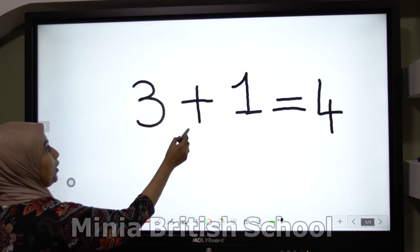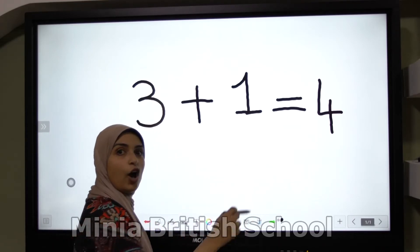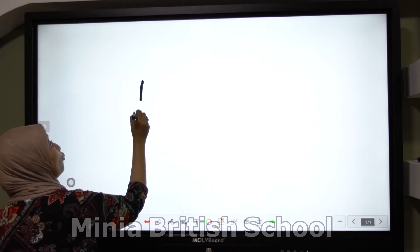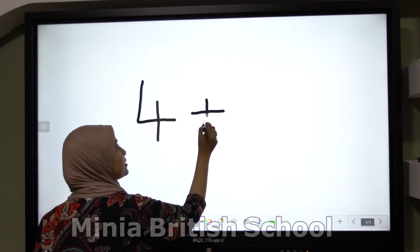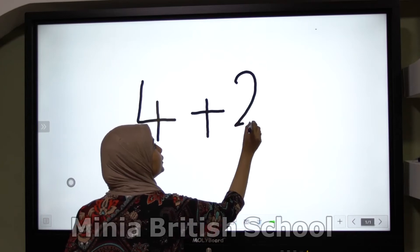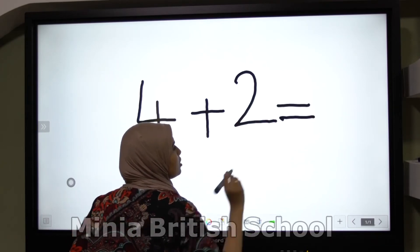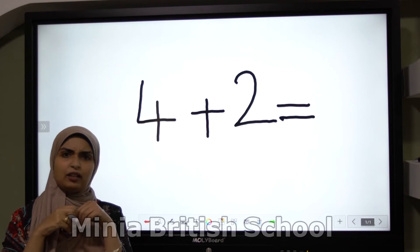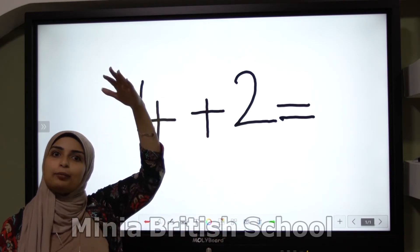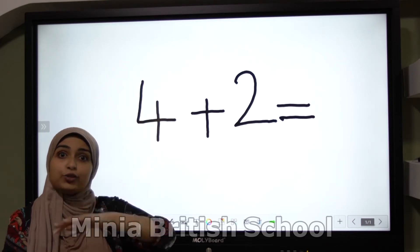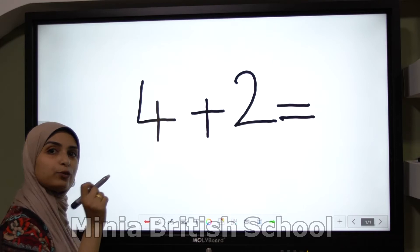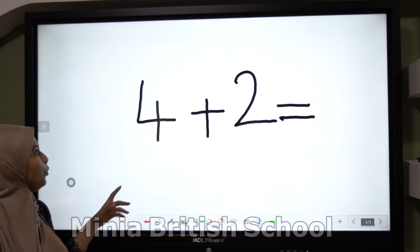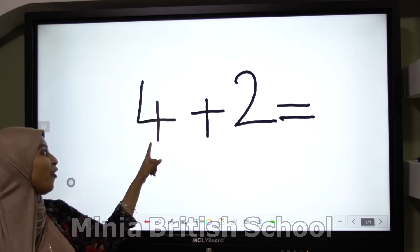So we will put number three in my mind and we will put number one in my hand. So what comes after three? Four - excellent KG! All of you read with me: three plus one equals four. Excellent KG! Let's see another equation: four plus two equals. So can you tell me KG, what is the sign? Plus - excellent! Plus means add something together.